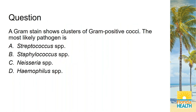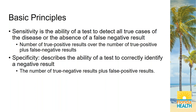A gram stain shows clusters of gram-positive cocci — the most likely pathogen is? This comes back to knowing what the names signify. Which beginning part of the word means clusters? Staph — correct. What about strep? What does that root mean? If staph makes you think of clusters, strep makes you think of chains — correct. Good job. Now let's get into Chapter 25.